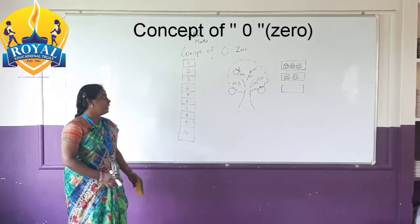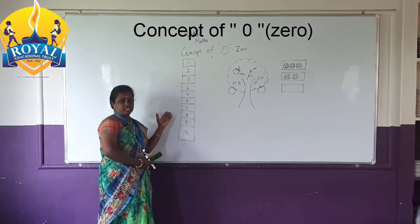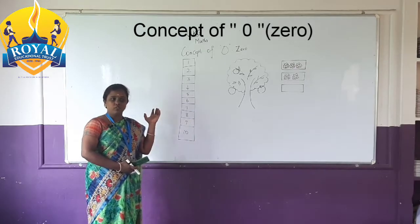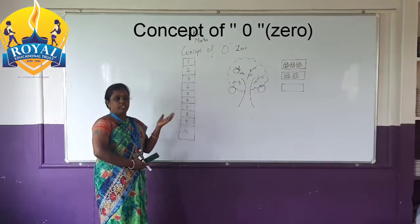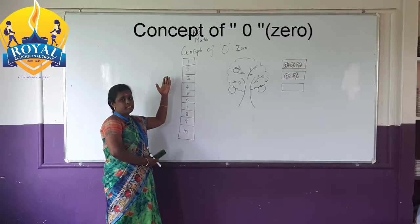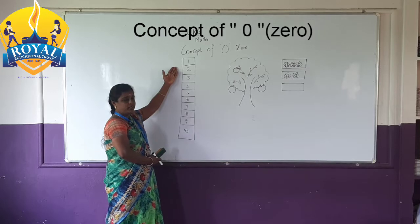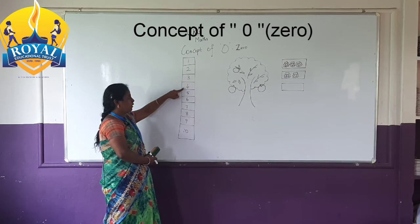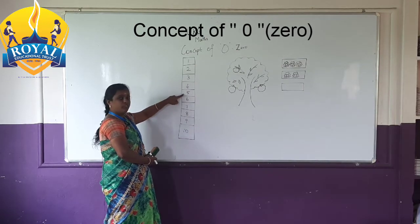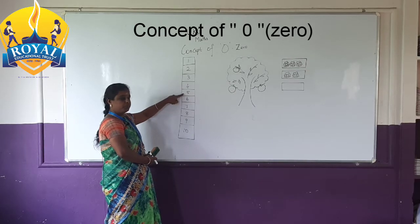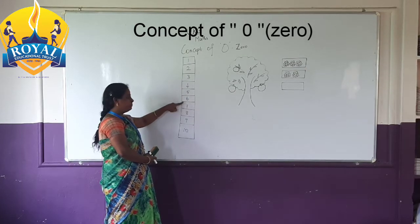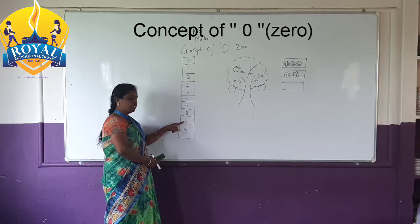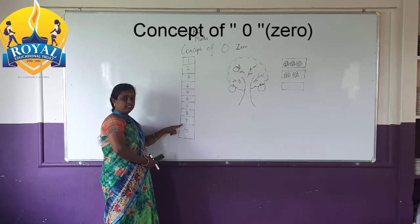As you know, you have already learned about the numbers. Can you tell me the numbers? How do you say numbers? Come and say the numbers. 1, 2, 3, 4, 5, 6, 7, 8, 9, 10.